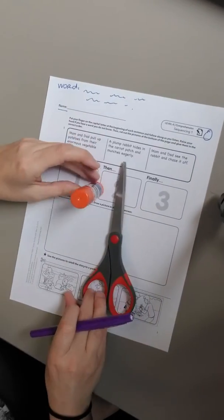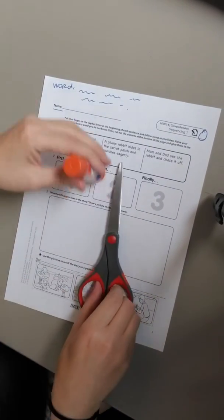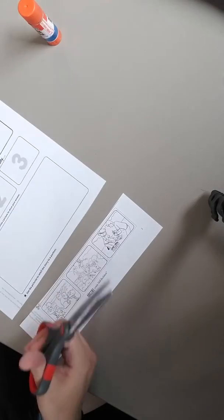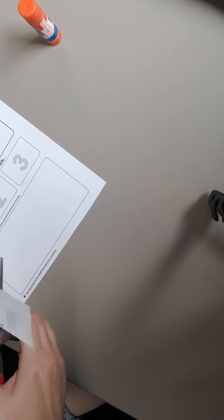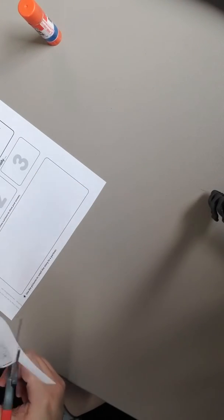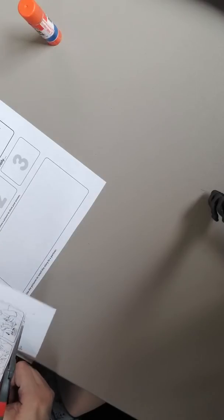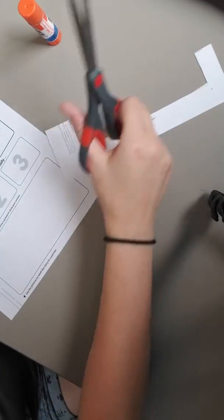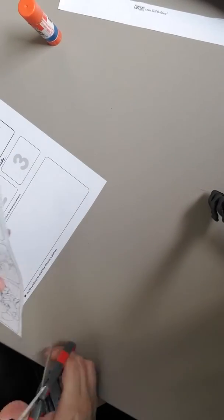Okay. So you need scissors and glue for this activity. So let's go ahead and cut out the pictures at the bottom. Make sure, since we're cutting out paper, that your paper ends up in the recycling bin. I do not want to see it on your desk. I do not want to see it on the floor. Make sure you're putting it in the right spot.